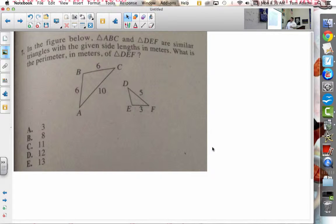Alright, so this one says in the figure that triangle ABC and DEF are similar triangles with given side lengths in meters. What is the perimeter in meters of DEF?